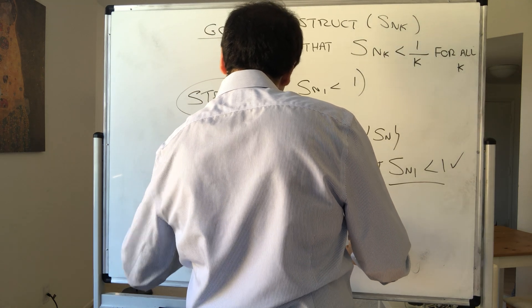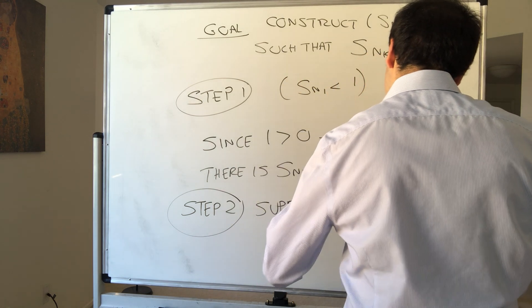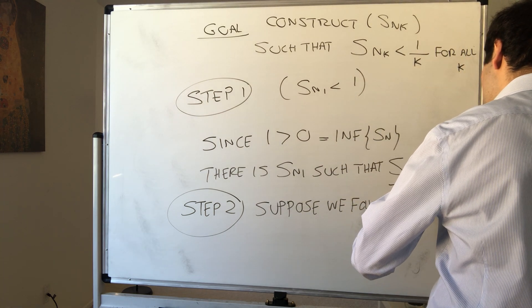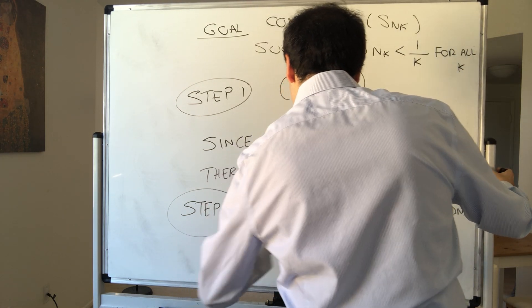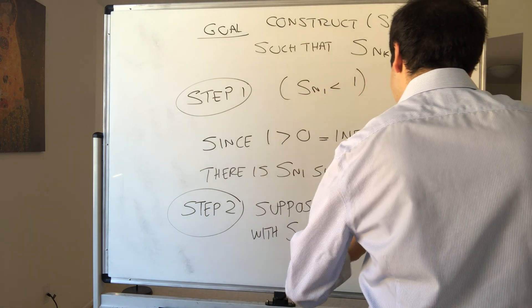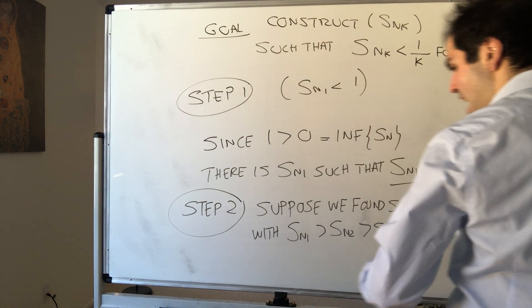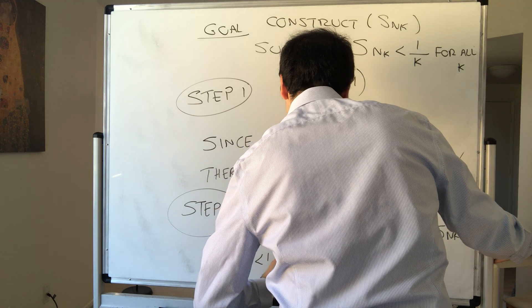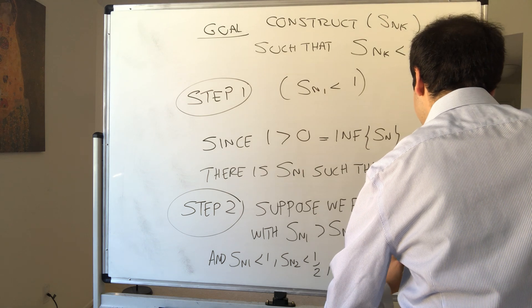Now step two is the inductive step. So suppose we found Sn1, Sn2, up to Snk, with again, decreasing. So Sn1 is bigger than Sn2, which is bigger than Sn3, which is bigger than Snk, and the stuff that we want. So Sn1 is less than 1, Sn2 is less than 1 half, and Snk is less than 1 over k.